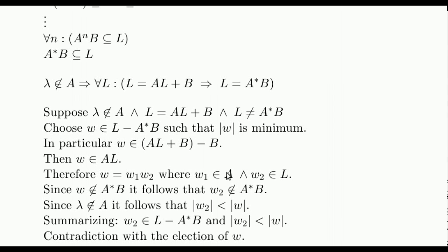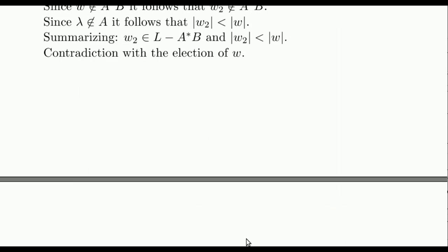w2 cannot be in A star B, else w would also be in A star B because w1 is in A. Moreover, since the empty word is not in A, w1 is not the empty word, and thus w2 is a strict suffix of w, implying that its size is smaller. Summarizing, w2 is in L but not in A star B, and its size is smaller than w. This contradicts the election of w as the word with the smallest size satisfying that it is in L but not in A star B, and this concludes the proof.